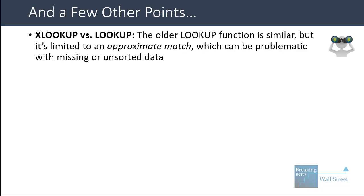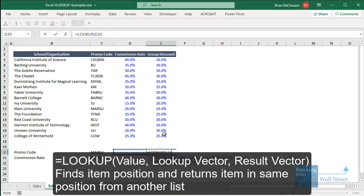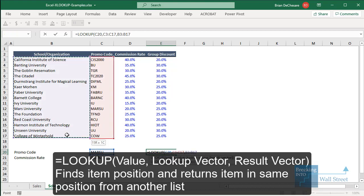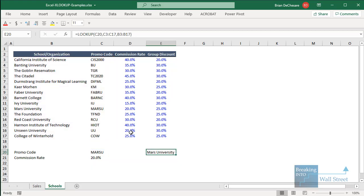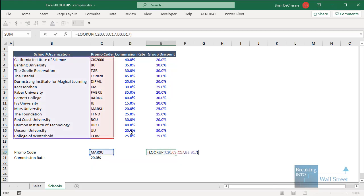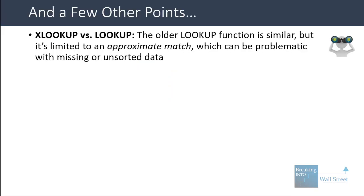There's an older function in Excel called just LOOKUP, which is similar but limited to approximate matches — problematic with missing or unsorted data. You can enter LOOKUP with the promo code as the lookup vector and school organization as the result vector, and it works for simple cases. But again, it only works with approximate matches, doesn't let you search in different directions, and has nothing to show by default if a value isn't found.